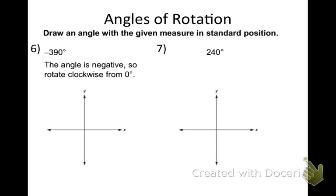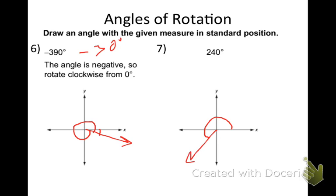Draw an angle with a given measure in standard position. For negative 390, think of the coterminal angle negative 30 degrees — it's a lot easier. You can go all the way around and still get negative 390; it's the same thing. For 240 degrees, that would be in quadrant three, something right about there.